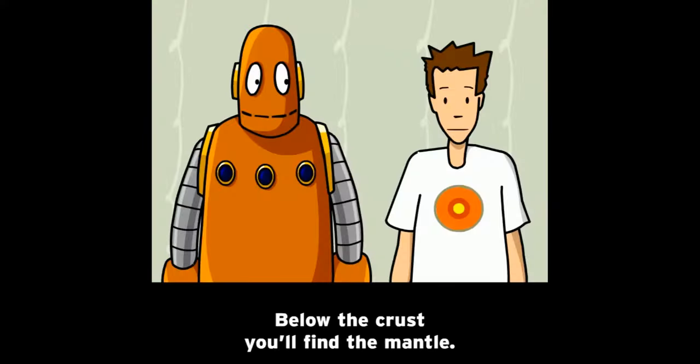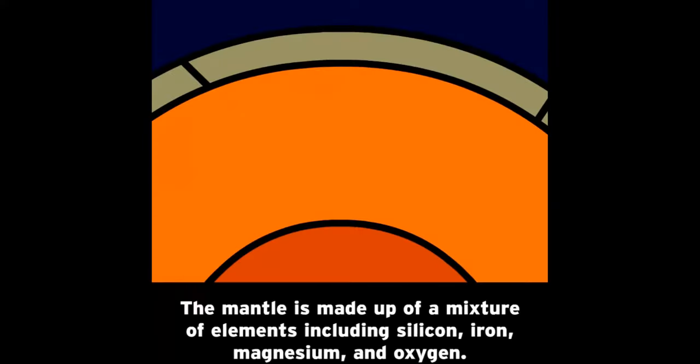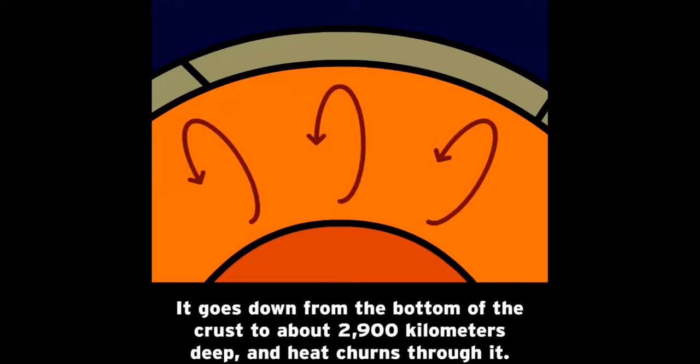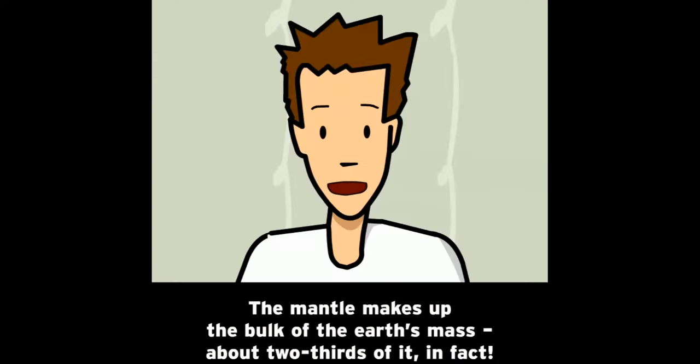Below the crust, you'll find the mantle. The mantle is made up of a mixture of elements including silicon, iron, magnesium, and oxygen. It goes down from the bottom of the crust to about 2,900 kilometers deep and heat churns through it. The mantle makes up the bulk of the Earth's mass, about two-thirds of it in fact.